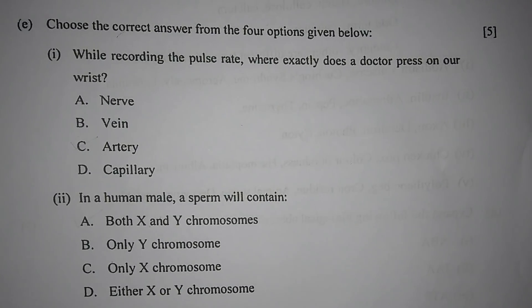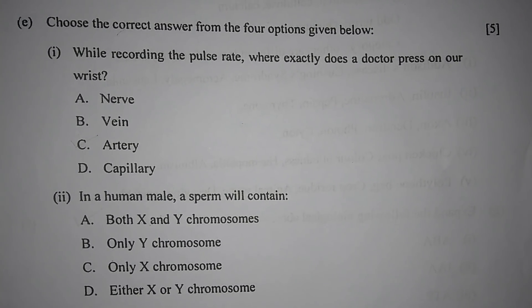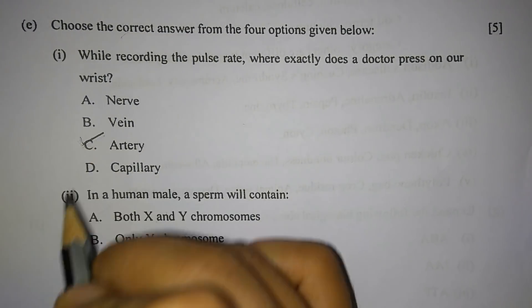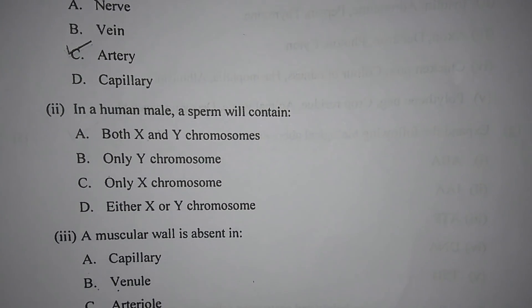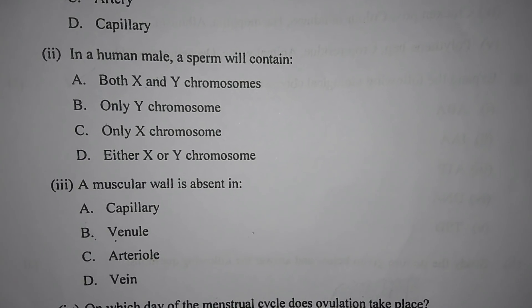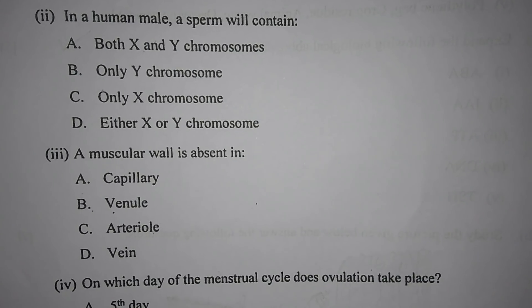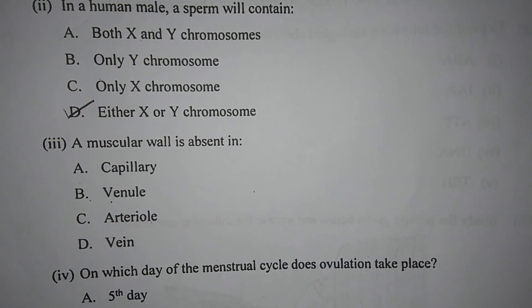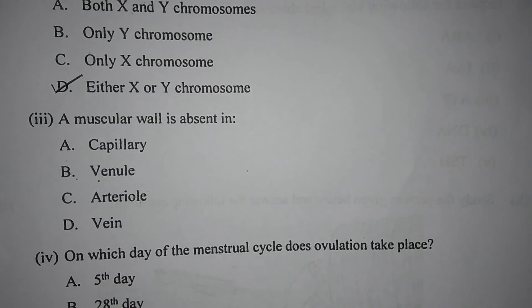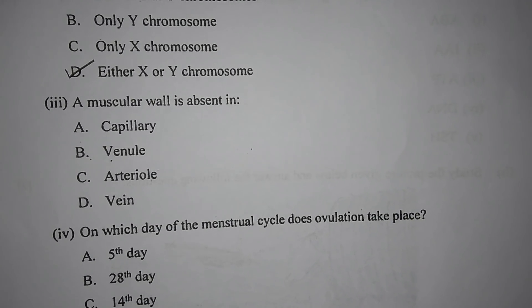Question 1e: Choose the correct answer from the four options. Number 1 — while recording the pulse rate, where exactly does a doctor press on our wrist? A) nerve, B) vein, C) artery, or D) capillary. The answer is C, artery. Number 2 — in a human male, a sperm will contain: A) both X and Y chromosomes, B) only Y chromosome, C) only X chromosome, or D) either X or Y chromosome. The answer is D, either X or Y chromosome.